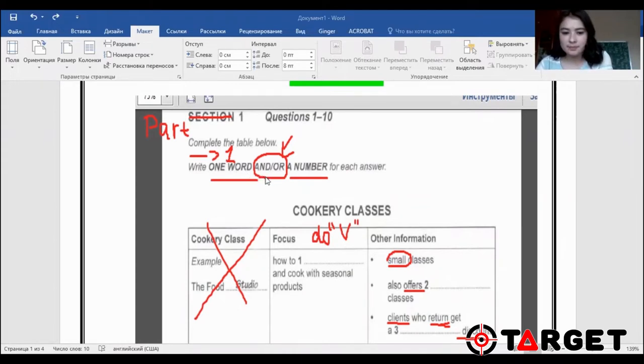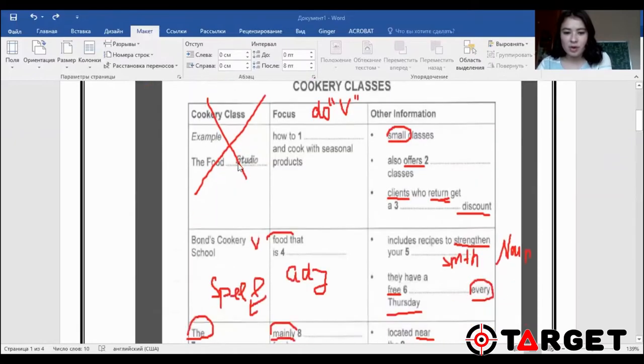Do not forget that and/or means that you can put a number as well, not only a word, but number as well. So here we go. Example I crossed out as well, because right now, in current latest tests, you're not going to have any example given to you. You're going to start directly from question number one.